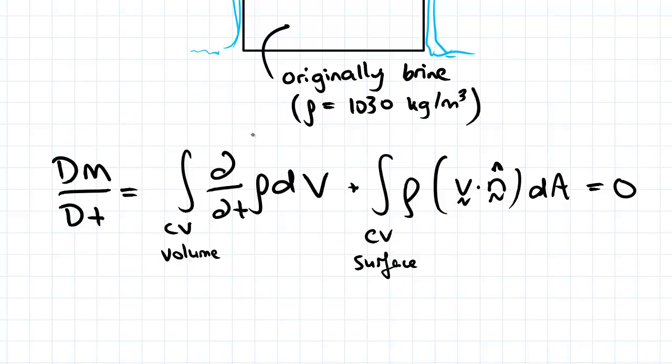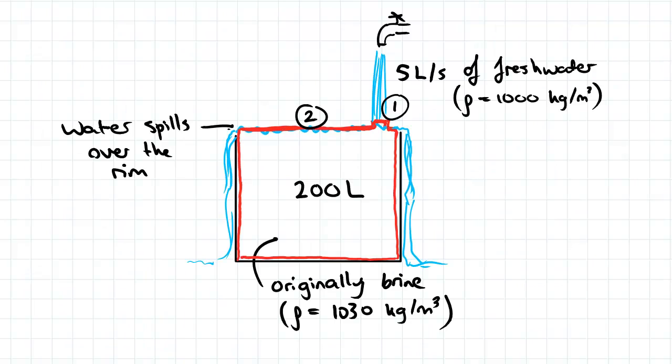We need to define our control volume first, which will be the drum as well as the bit flowing from the tap here, so this tiny little bit here. I've included that for purely academic reasons, but practically we're looking at the inflow and outflow of the drum—that's only to distinguish the two surfaces.